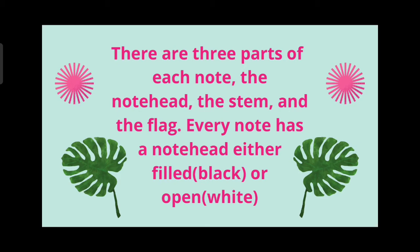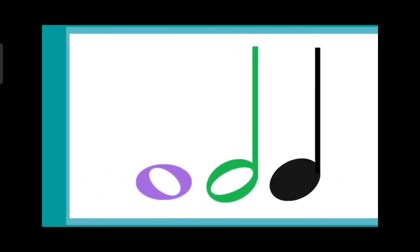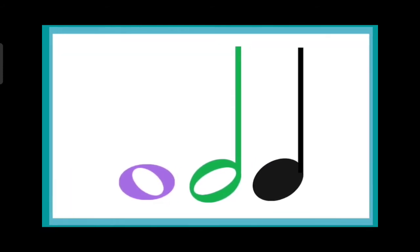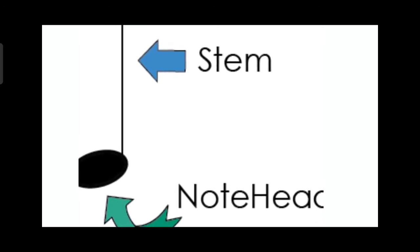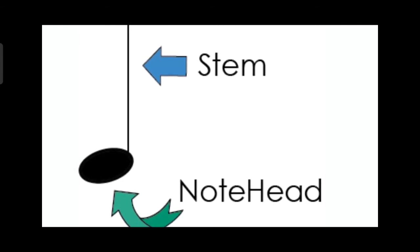Taking a look at these notes, the purple is just a note head, a semi breve note. The green is a minim note, it has white or it is open. Then we have the black which is a crotchet note, it is shaded or has a black head, but they all have stems. Now look at this note head and the stem.